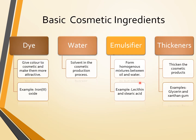Basic cosmetic ingredients: Dye gives color to cosmetics and makes them more attractive — for example, iron oxide, which produces a brown color. Water is a solvent in the cosmetic production process. Emulsifier forms a homogeneous mixture between oil and water — examples include lecithin and stearic acid. Thickener thickens the cosmetic product such as creams for easier application — examples include glycerin and xanthan gum.